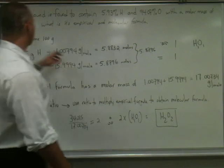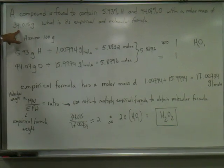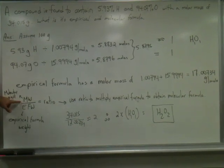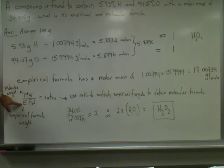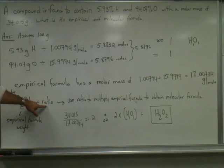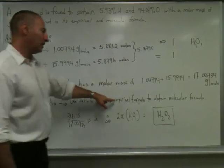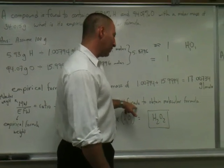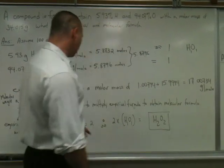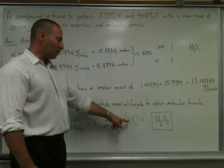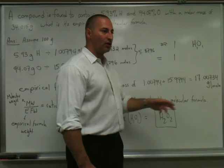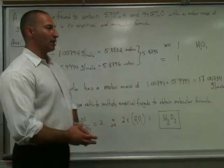But we're told that the molecular weight is twice that much. So how do we find the actual molecular weight? You take the molecular weight, and you divide it by the empirical formula weight. It gives you a ratio. Then you use that ratio to multiply the empirical formula to obtain the molecular formula. So 2 times H1O1 gives you the formula H2O2. Our unknown compound is hydrogen peroxide.